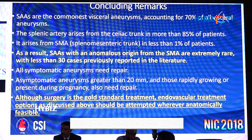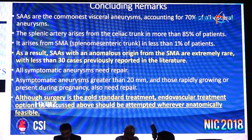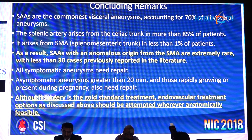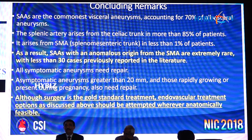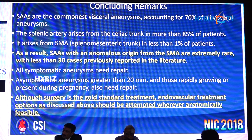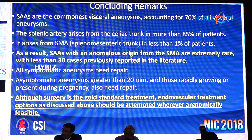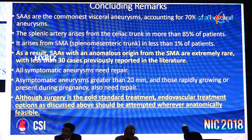In conclusion, splenic artery aneurysms are the most common visceral aneurysms, but usually the splenic artery arises from the celiac trunk. In our case it was a rare presentation — anomalously arising from the SMA with an aneurysm, which is very rarely reported. Only 30 cases have been reported in the literature so far, most of them managed surgically. This was one of the rare cases managed successfully through an endovascular approach.